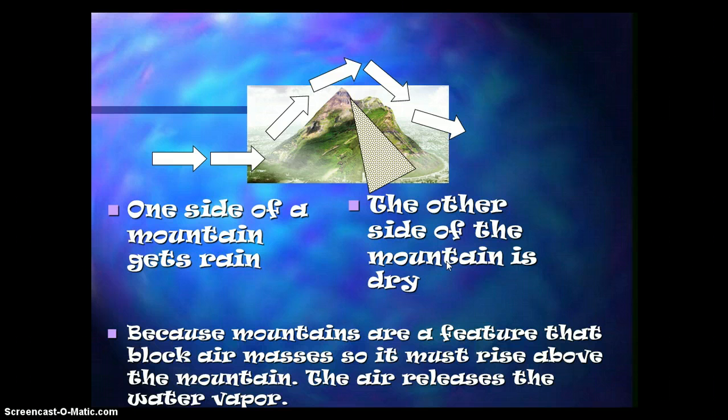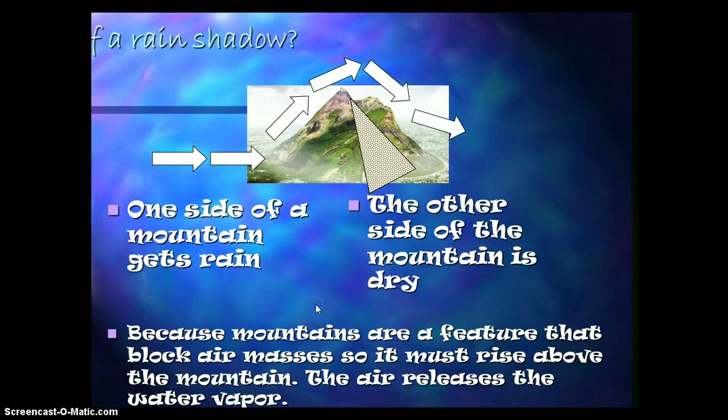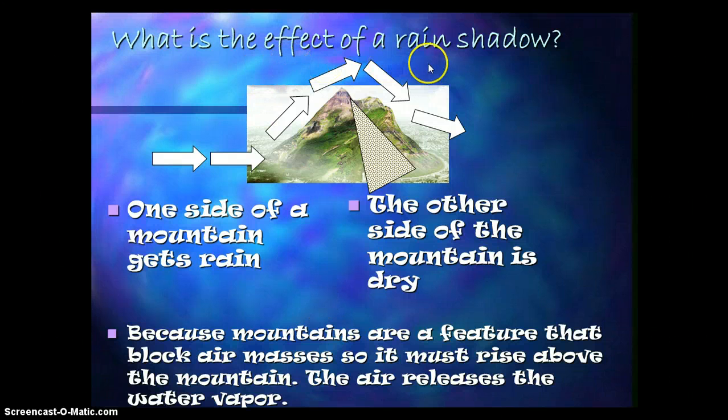Now this is an important question because we're talking about land features here and specifically mountains. There's a question on tomorrow's quiz that talks about mountains. One side of a mountain gets rain, the other side of a mountain stays dry. Because mountains are a feature that block air masses, so it must rise above the mountain, the air releases the water vapor. This would answer that question, what is the effect of a rain shadow? What you have is you have all of this air and the air starts moving up the mountain. And that air gets into the clouds and the clouds, of course, are full of water vapor. And when that water vapor gets distraught, it starts to rain. But of course, the air is able to move over one side and there's nothing over here, which means you have rain on the one side of the mountain and it's completely dry on the other side of the mountain. So because we have a mountain, sometimes that can impact a rain shadow or shower where it's raining on one side but it's dry on the other.